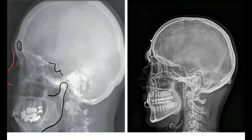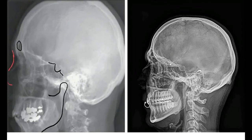In the lateral view, we can also see the frontal air sinus within the frontal bone. Below that is the orbital plate of the frontal bone. Just below that is the cribriform plate of the ethmoid.